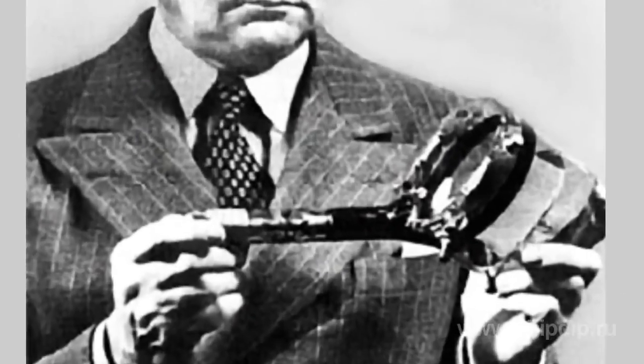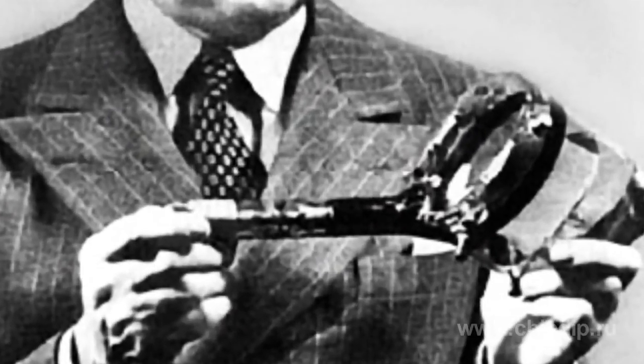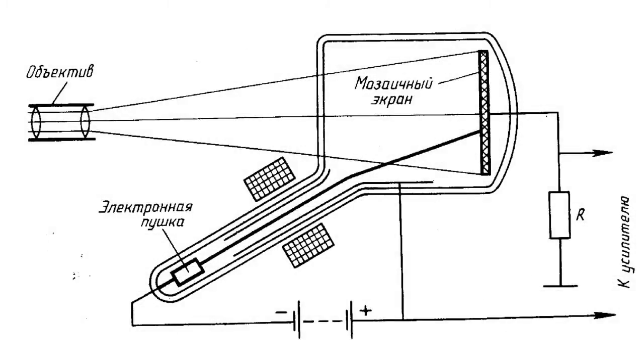In 1931, the American scientist Vladimir Zworykin created a tube with charge accumulation. He called it the Econoscope, from the Greek word icon, meaning image, and scope, meaning to look and to see.